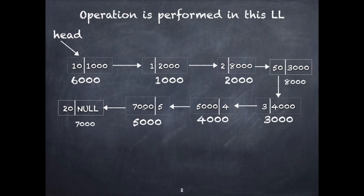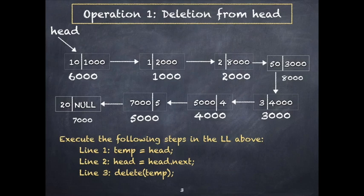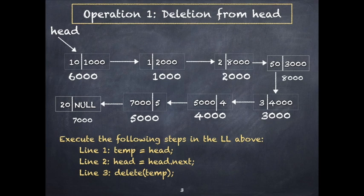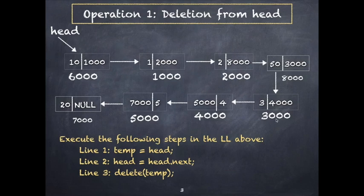The first operation is deletion from head — deleting the first node in the linked list. You have to preserve the head pointer, because only then can you reach all other nodes. You can't directly delete head, because the head pointer currently holds the address of the first node, and deleting it would cut the link to the remaining part of the linked list.